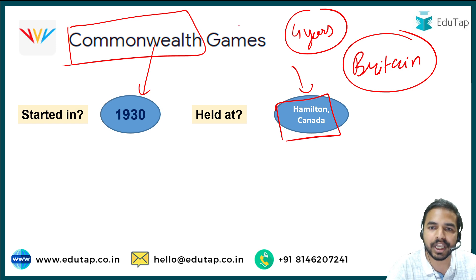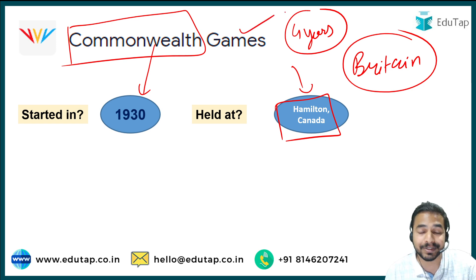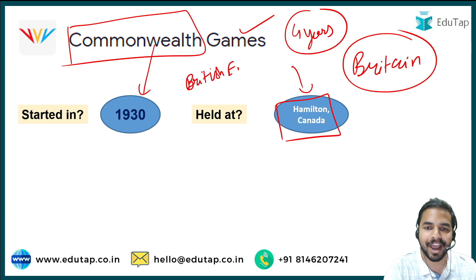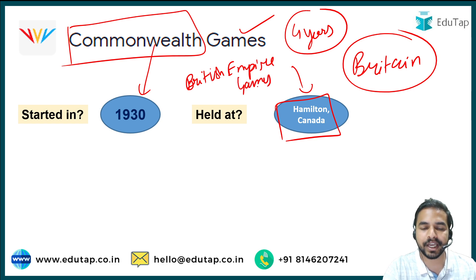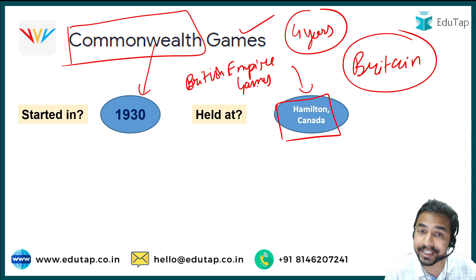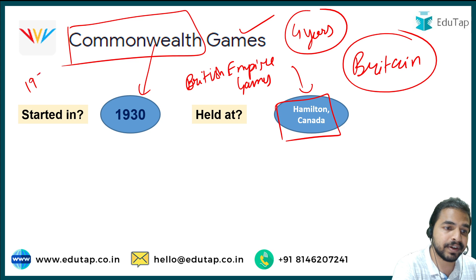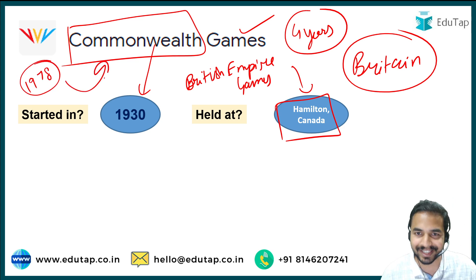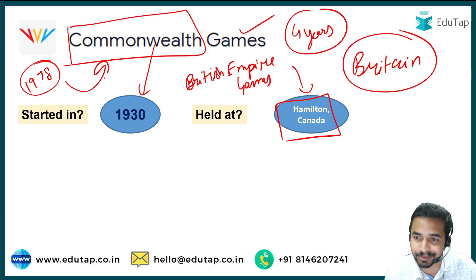When I talk about the name of these games — the Commonwealth Games — earlier they were recognized as the British Empire Games. From 1978, these games were renamed as the Commonwealth Games.